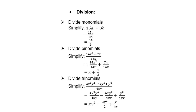Divide binomials: be careful — when you have more than one term in either the numerator or the denominator, you are not allowed to cancel. You must either divide 14x squared into both terms, or try factorization. Dividing 14x into both terms gives x plus a half. Same with trinomials: do not cancel; divide 4xy into all three terms individually and then simplify.